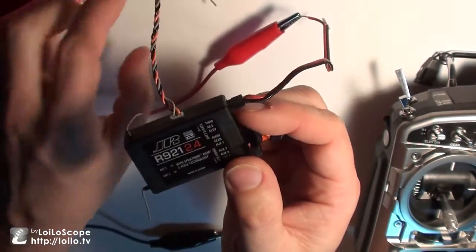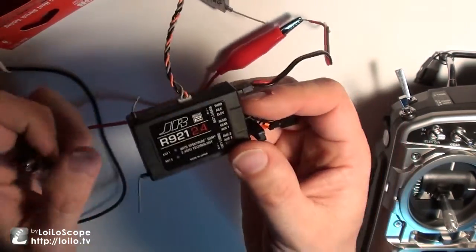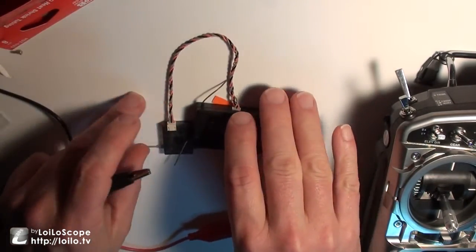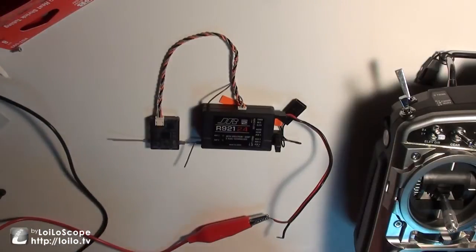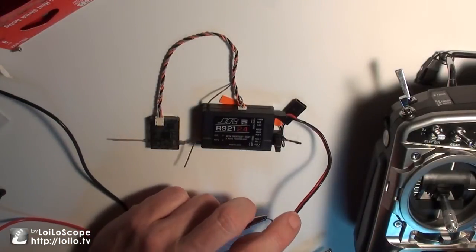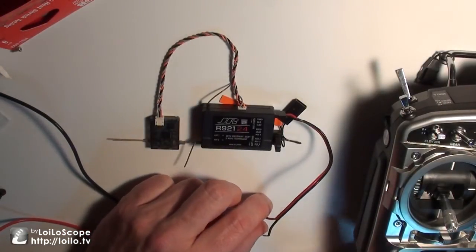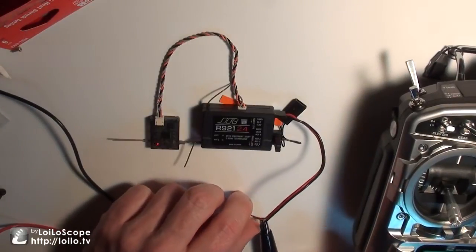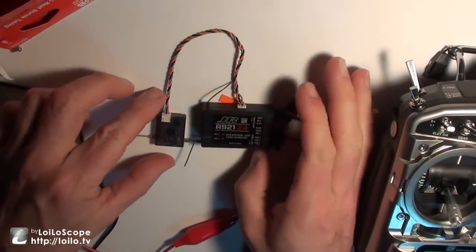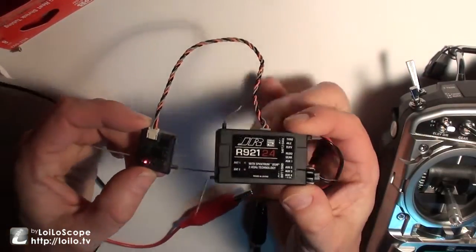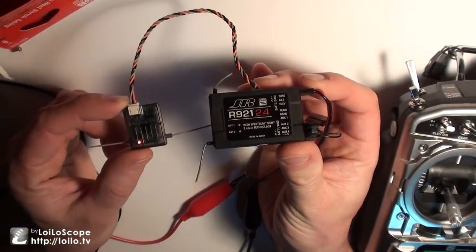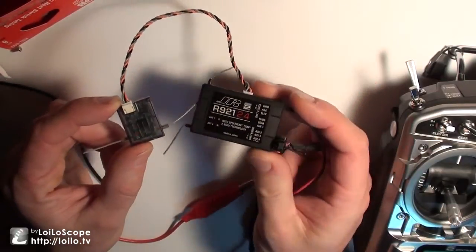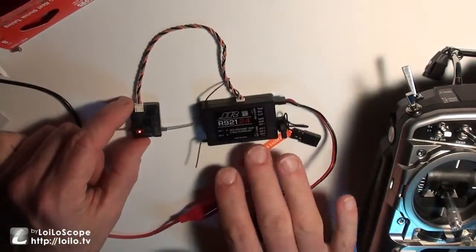Now when we turn it on, when I connect up the power, what we should see is we should see the lights start flashing. Also right now, my radio is turned off. As we turn on the power, you see how these guys are just flashing up a storm. That means it is ready to bind. It's waiting, it's looking for a signal from the radio.